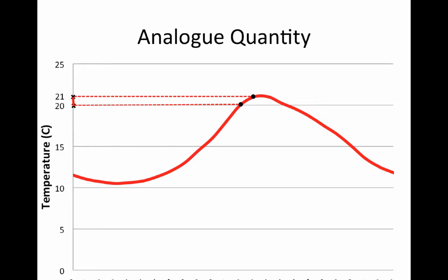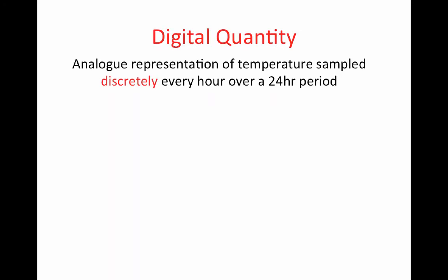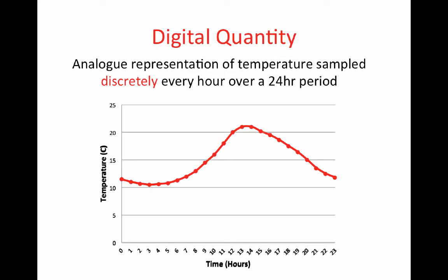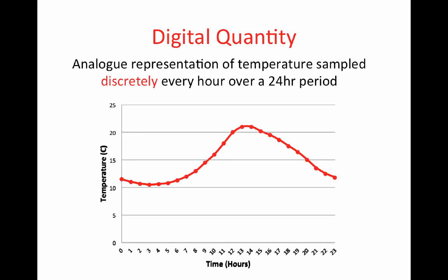If we were to sample temperature over the same 24 hour period, but now take a temperature reading every hour, as illustrated in the graph, we have effectively sampled a value of temperature at discrete points in time. In this case, every hour over a 24 hour period.